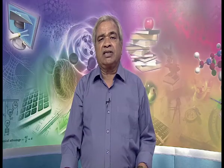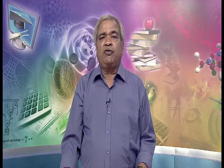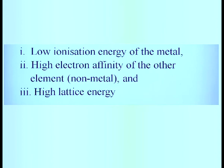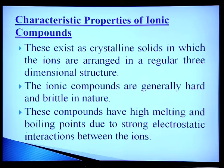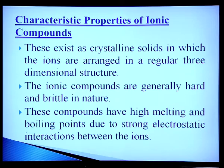On the basis of the above discussion, we can say that the formation of ionic compounds is favored by: (1) low ionization enthalpy of the metal, (2) high electron gain enthalpy of the non-metal, and (3) high lattice energy. The characteristics of ionic compounds include: they exist as crystalline solids in which ions are arranged in a regular three-dimensional structure, and they are generally hard and brittle in nature.